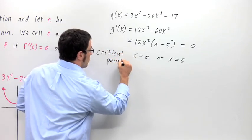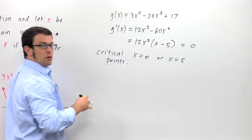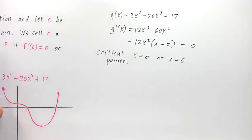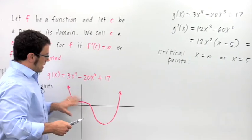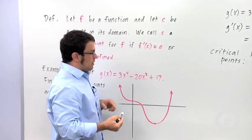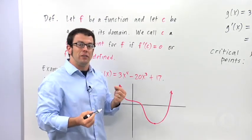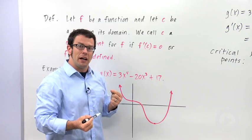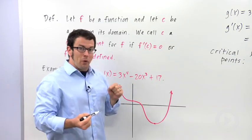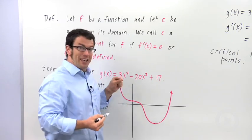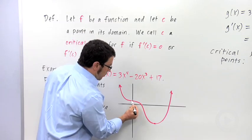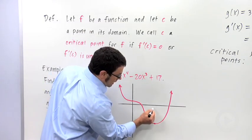Now let me show you what the critical points look like on the graph. Going back here, I have the graph. I didn't mark any of these points. But since the derivative gives us the slope of a tangent line, and the critical points are points where the slope of the tangent line is 0, these are the critical points here: x = 0 and x = 5.